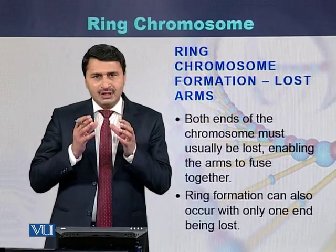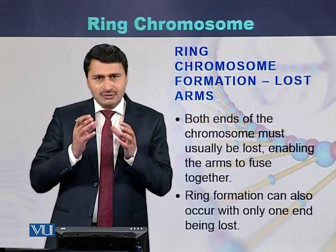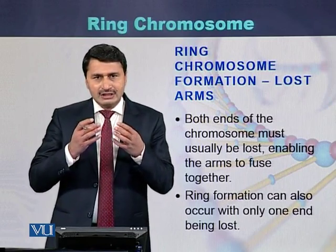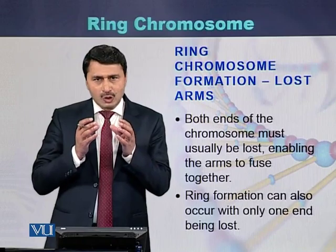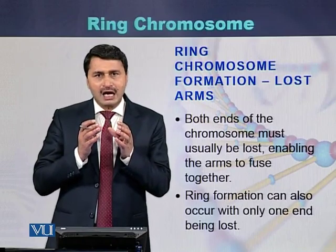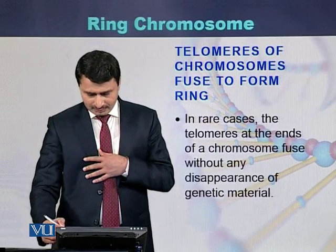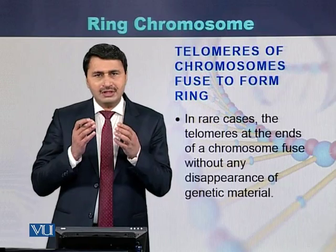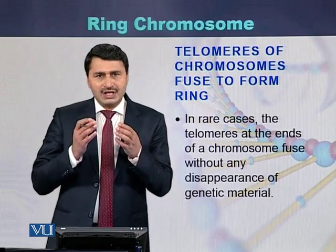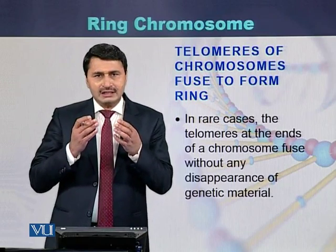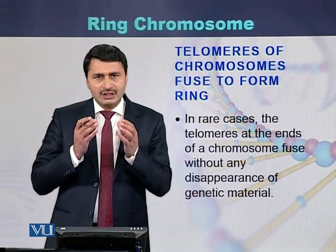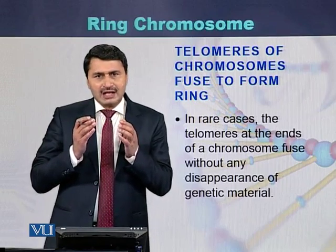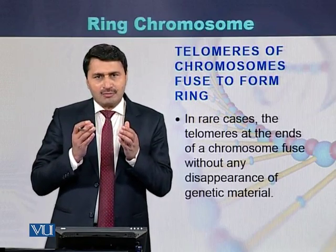Sometimes only one end fuses while the second end is not lost — even then, the telomere ends join with each other to form a ring. In rare cases, the ends of the chromosome, meaning the telomeres, are not destroyed, yet they still join to form a ring. So there are different types of ring formation.